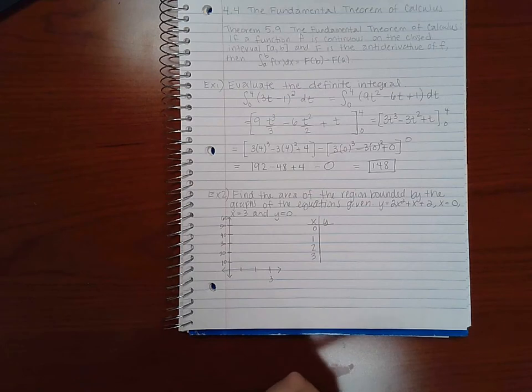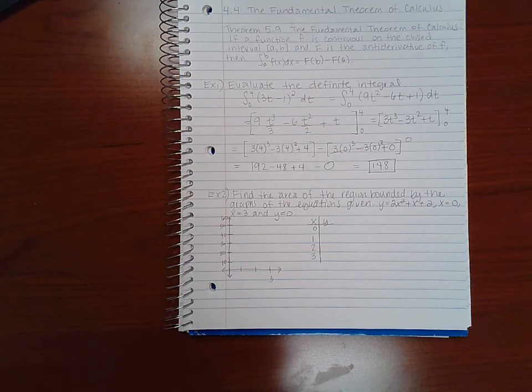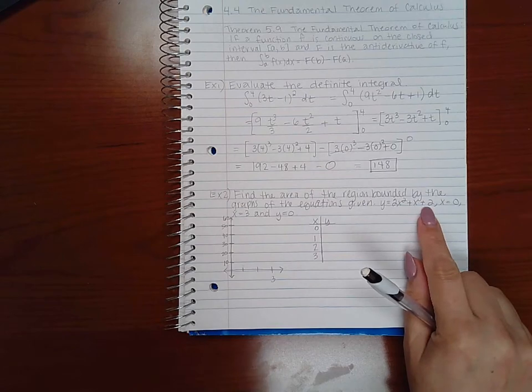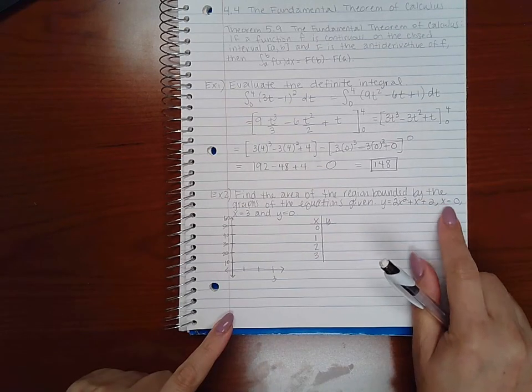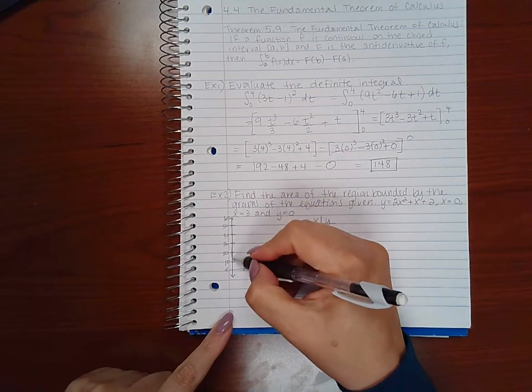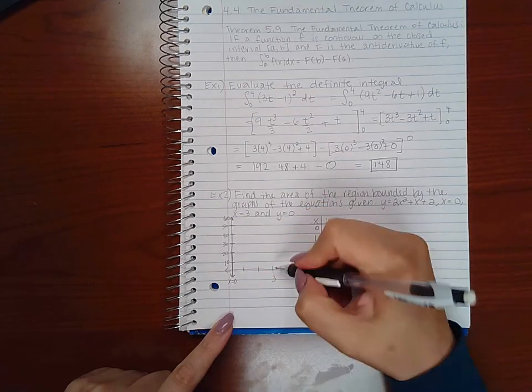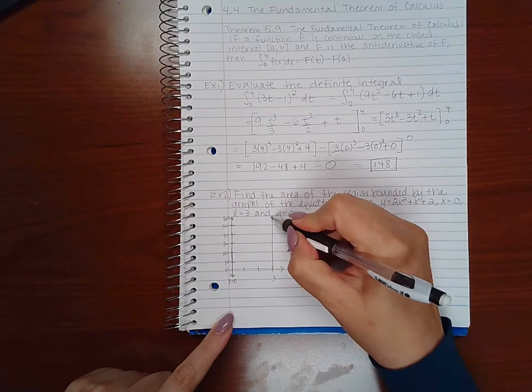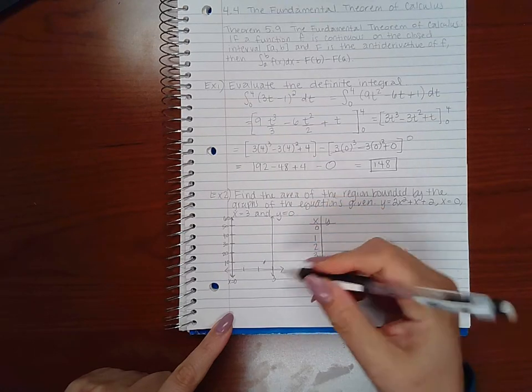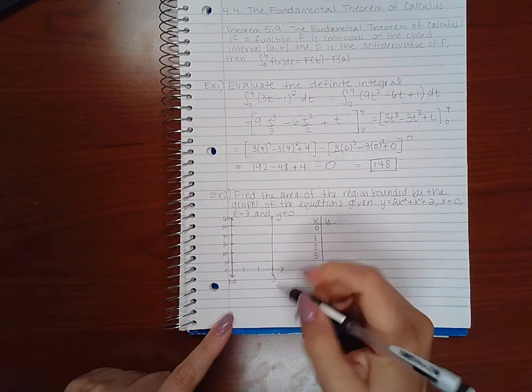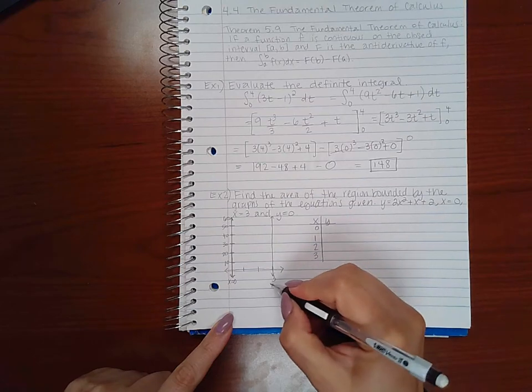Now example 2 is going to tie back into the idea of area. So it says find the area of the region bounded by the graphs of the regions given. So you've got this equation, x equal to 0 is just the y-axis. x equal to 3 would be a vertical line going this direction. That would be the equation x equal to 3.